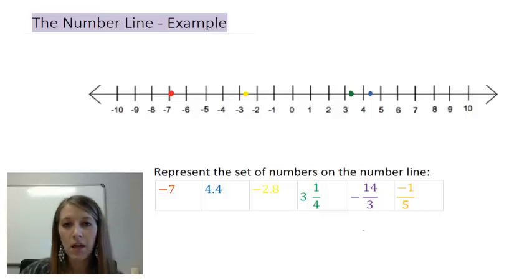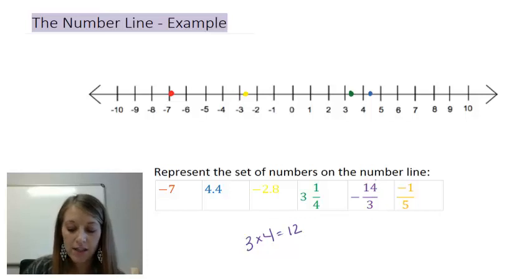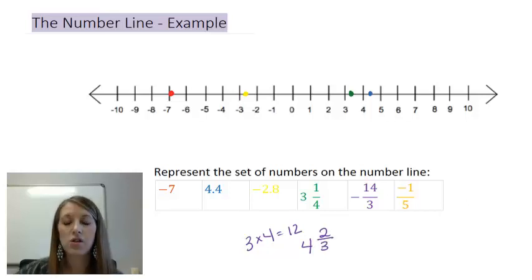3 goes into 14 evenly 4 times, because 3 times 4 gives me 12, so it goes in there evenly 4 times. So if I take 12 away from this, that would give me the whole number of 4, and that would leave me with 2 of those leftovers. So I have negative 4 and 2 thirds.